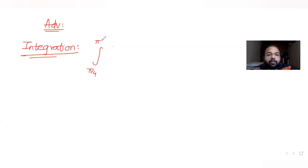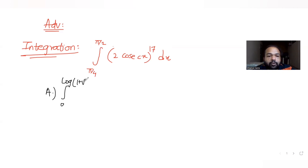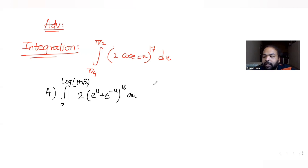The question says that the limits are from π/4 to π/2 for the integral. The expression given to us is (2 cosec x)^17 dx. We have been told that this integral can be transformed into another integral. The first option has limits from 0 to log(1 + √2) with the expression (2/(e^u + e^(-u)))^16 du.